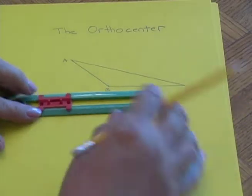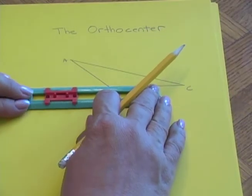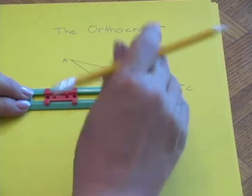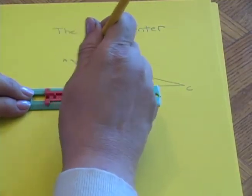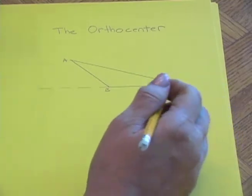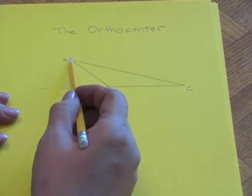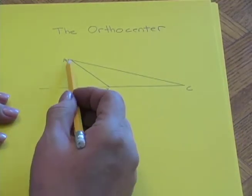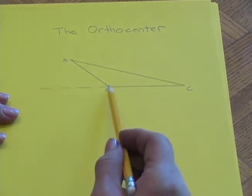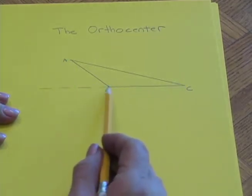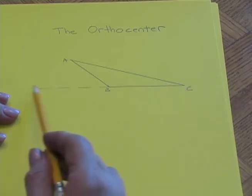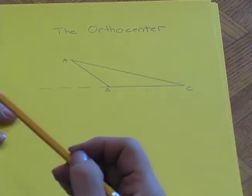I'm going to start by constructing the altitude from A to the line that contains BC. Notice that an altitude is perpendicular, and I can't draw a perpendicular that actually intersects BC, so I had to extend BC out along the infinite line that contains it.